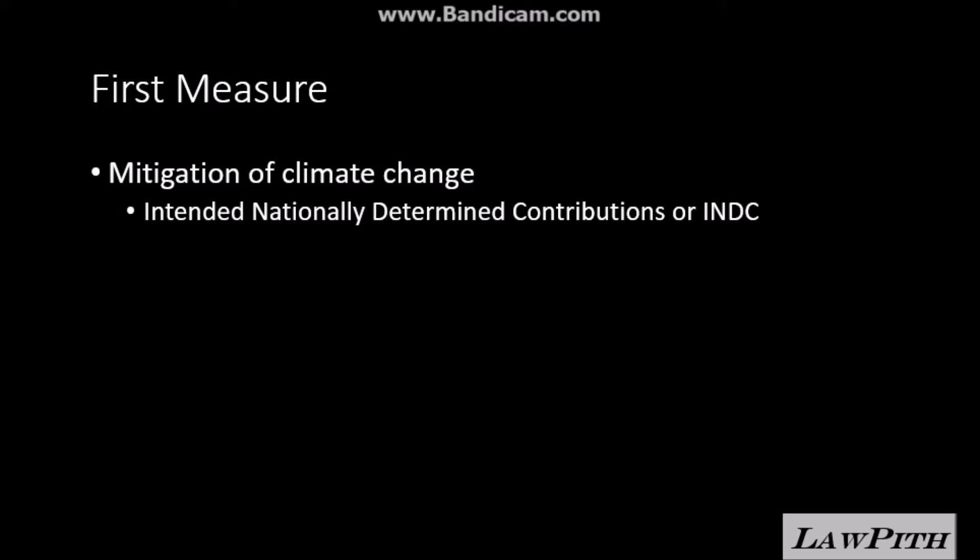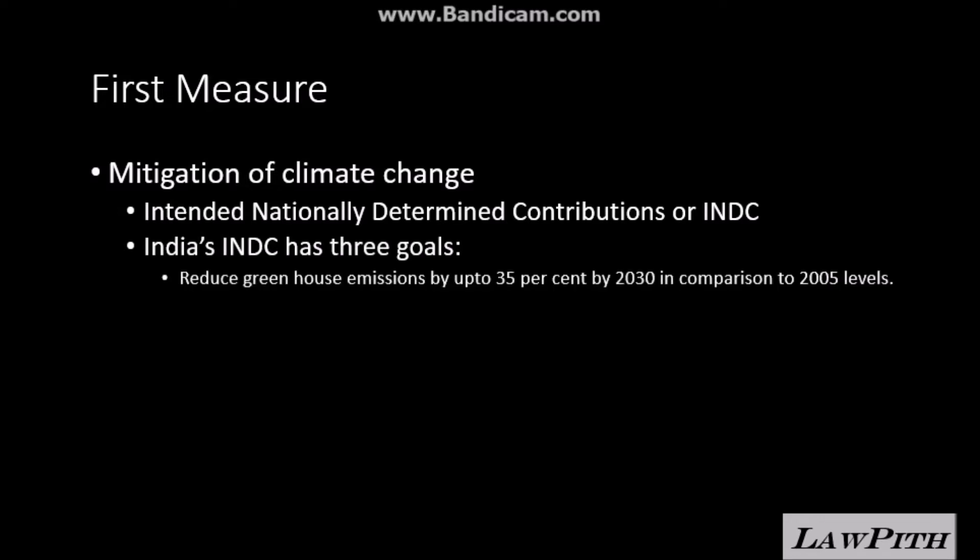Allow me to explain this in very simple terms. What this means is that every country which is a party to the Paris Agreement will submit a report stating that by so and so year, we will reduce our carbon emissions by so and so percentage in comparison to a baseline year. For instance, India has submitted before the Paris Agreement negotiations that it has three goals. The first one is to reduce greenhouse emissions by up to 35% by 2030 in comparison to 2005 levels.